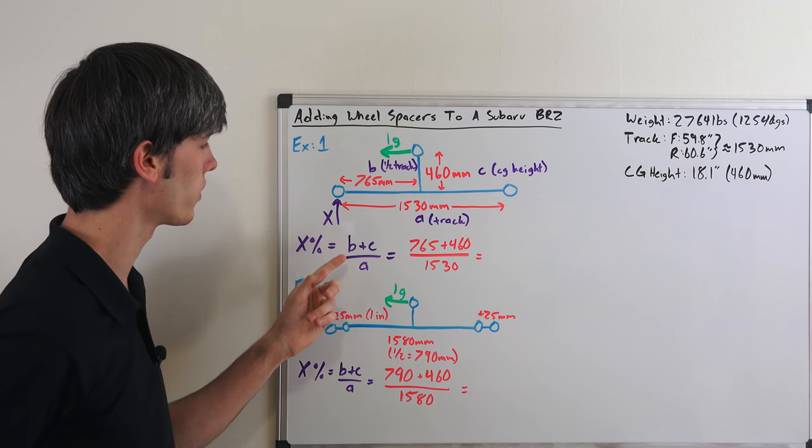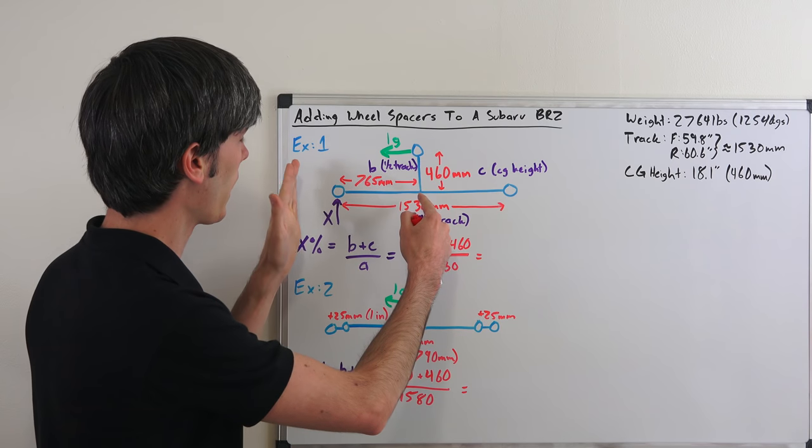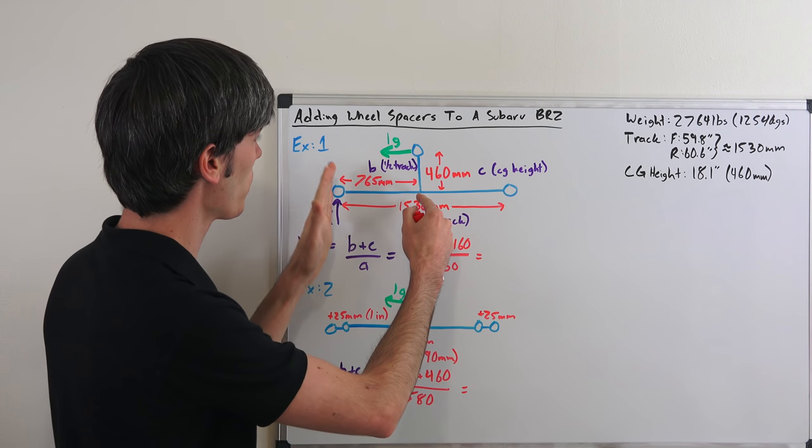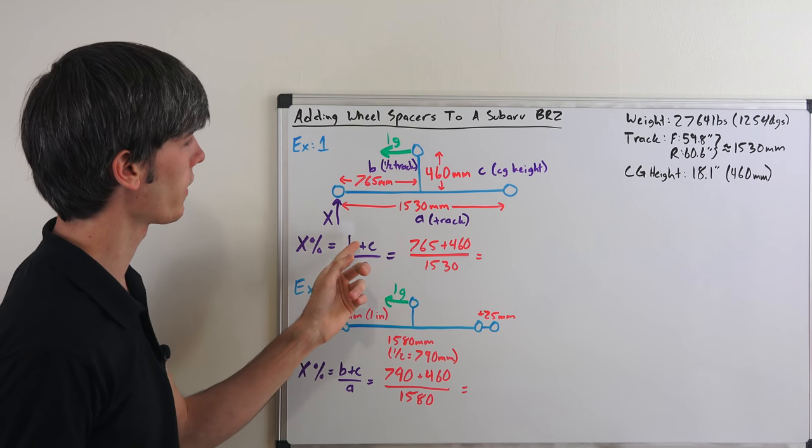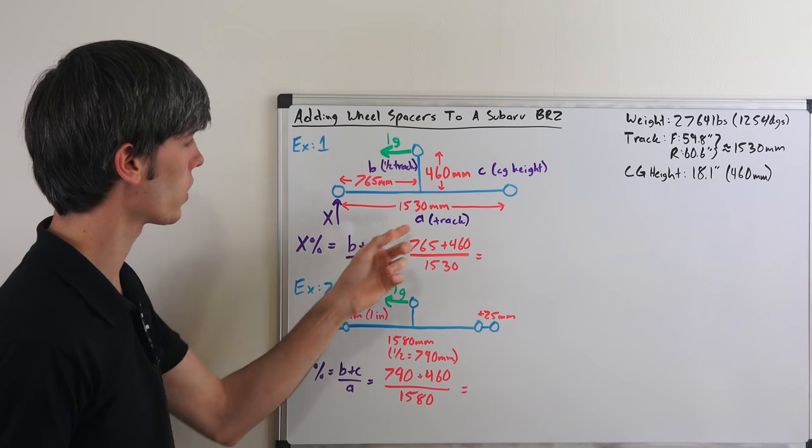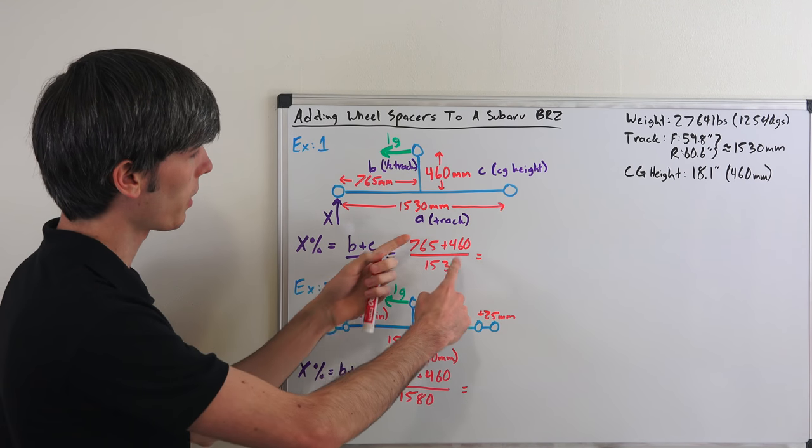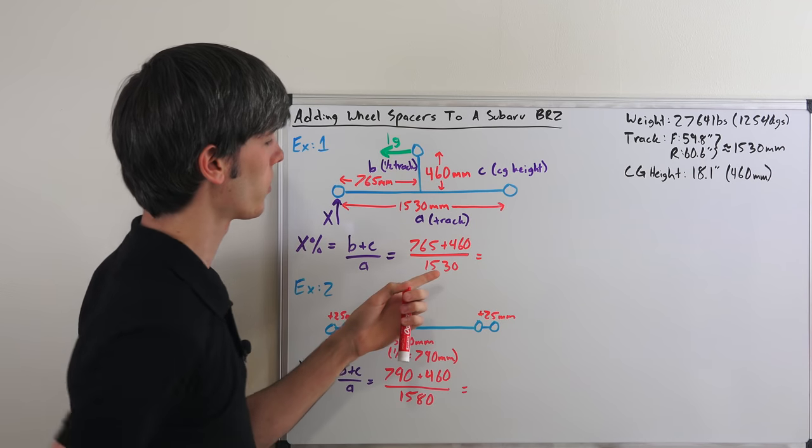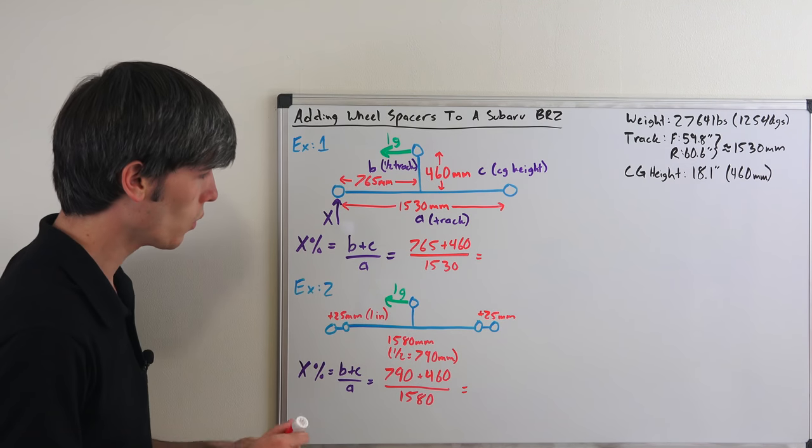The percentage of load transfer to X is equivalent to B, which is half of the track—the distance from the center of the wheel to the center of gravity—and then you have C. You're going to be adding that to B. That's the center of gravity height. And then you're dividing all of that by A, which is the track. So 765 millimeters plus 460 millimeters all over the track which is 1530. What does that give us?